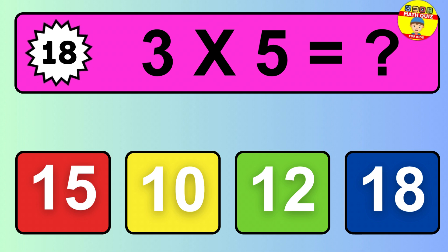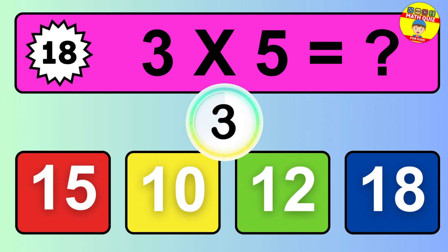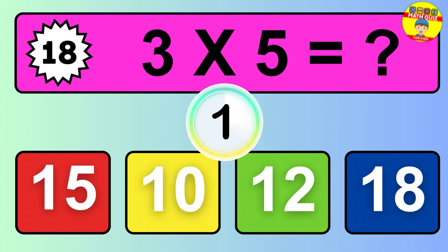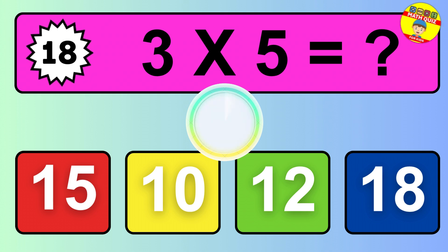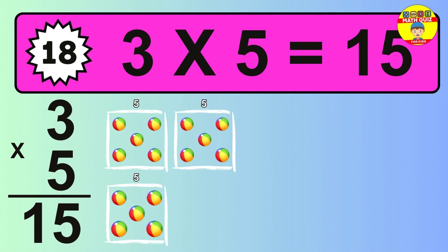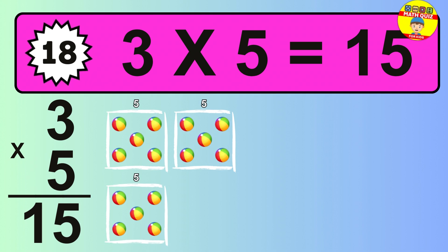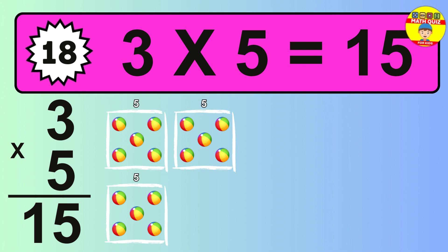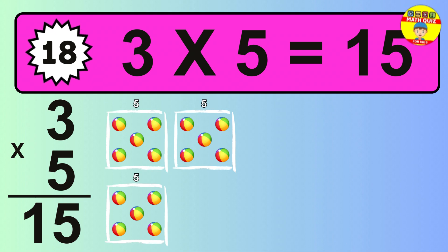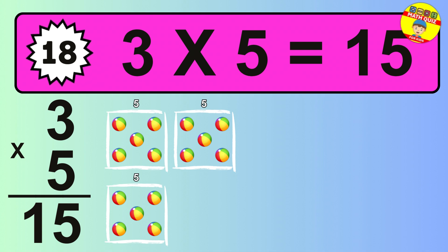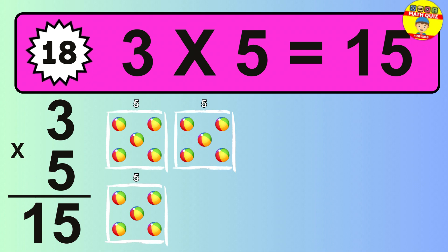Question 18. Three times five equals what? The answer is three times five is fifteen. To calculate, we have three groups with five balls each one. So how many balls do we have? Fifteen balls.